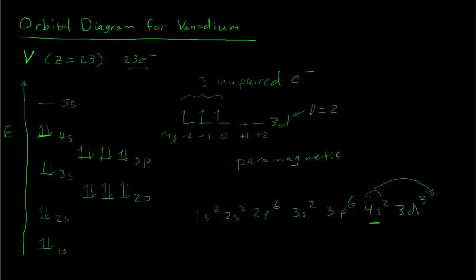And so this would be an orbital diagram for vanadium. Sometimes you will see orbital diagrams written out in a line like this, 1s, 2s, 2p, and so on, instead of vertically like I've drawn them. And that's perfectly okay as well.